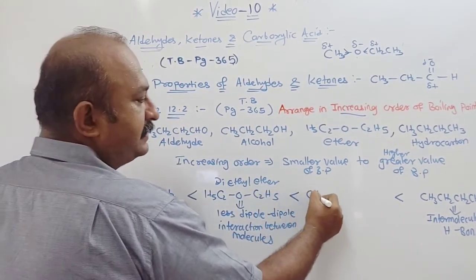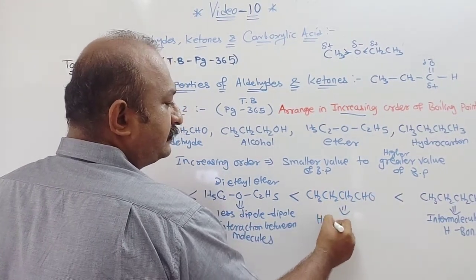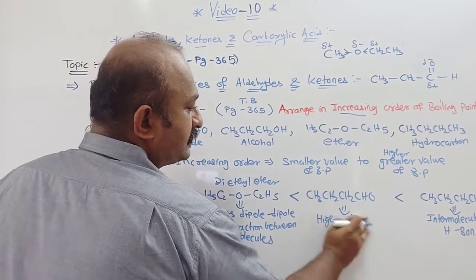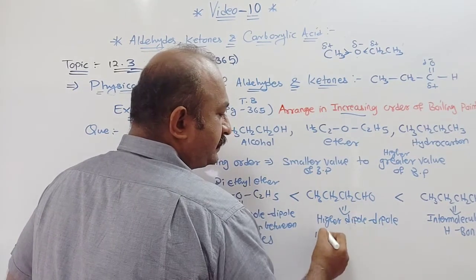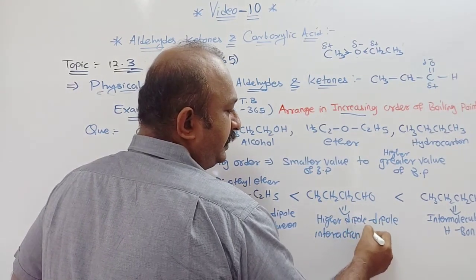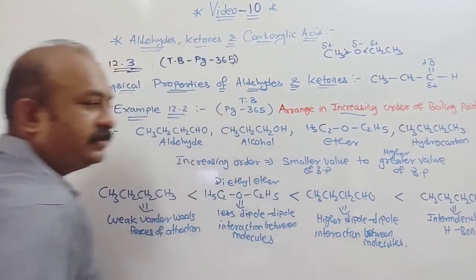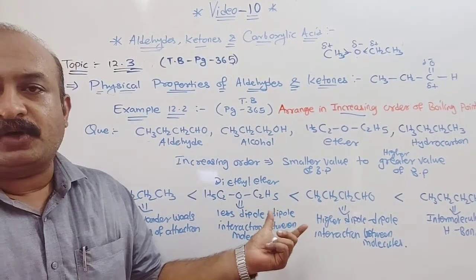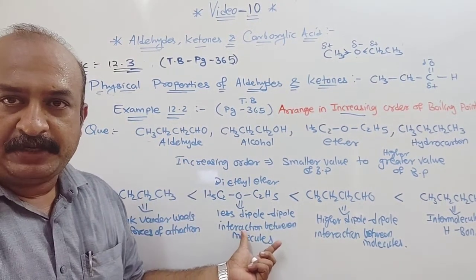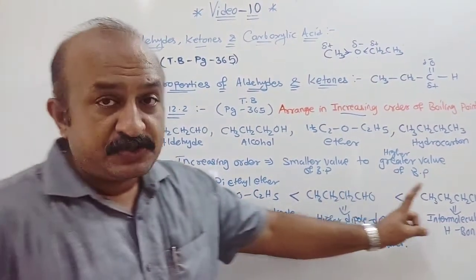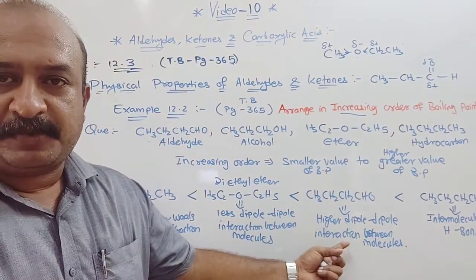Then comes aldehyde: CH3CH2CH2CH2CHO, due to higher dipole-dipole interaction between molecules. So the increasing order is: hydrocarbon (weak van der Waals) < ether (less dipole-dipole interaction compared to aldehyde) < aldehyde (absence of hydrogen bond compared to alcohol) < alcohol (intermolecular H-bond, highest boiling point).